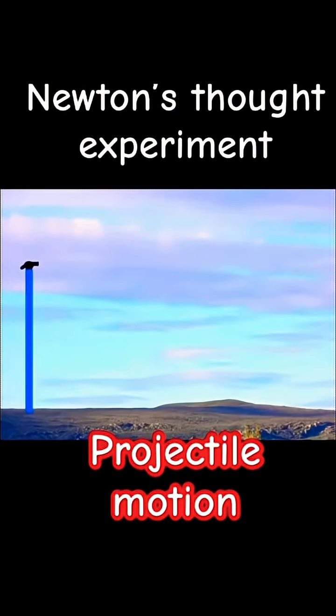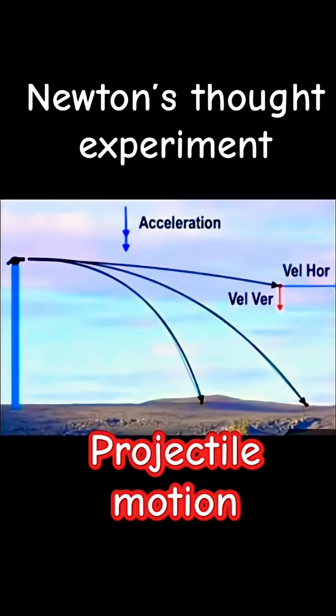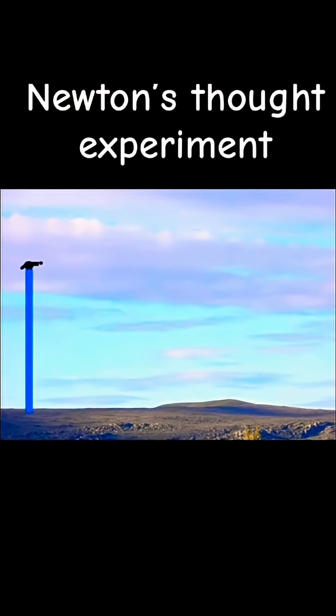Newton had a thought experiment and he used the idea of projectile motion to explain orbits. Now projectile motion has only one force acting if there's no air resistance, and that's the force of gravity straight down to the center of the Earth.